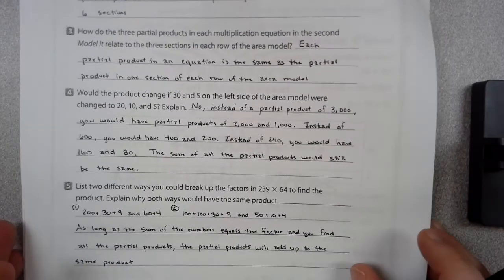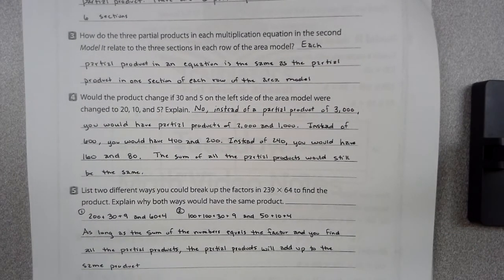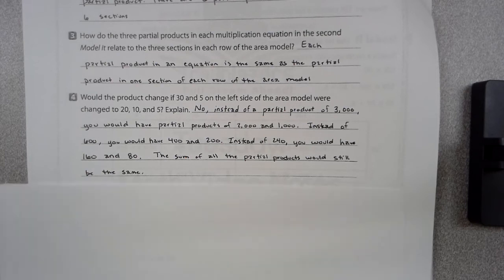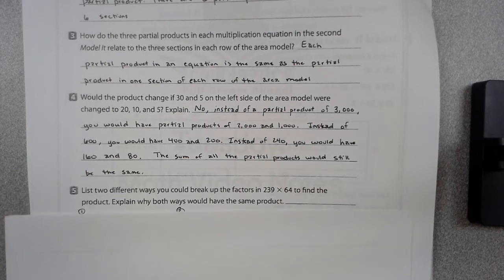This is pretty long, so you will have to pause it. It wouldn't change. What would change would be the answers inside of the model. Instead of a partial product of 3,000, you would have a partial product of 2,000 and 1,000. But they both equal 3,000 when you add them together. The sum of all the partial products would still be the same.